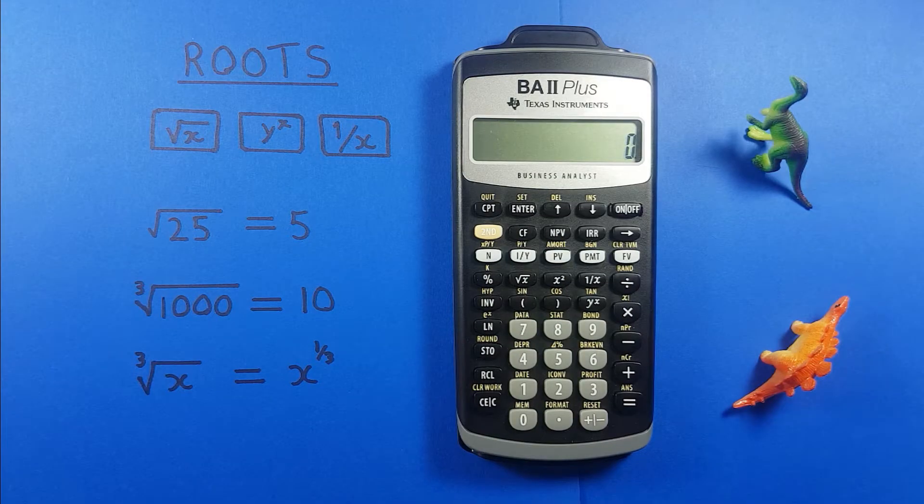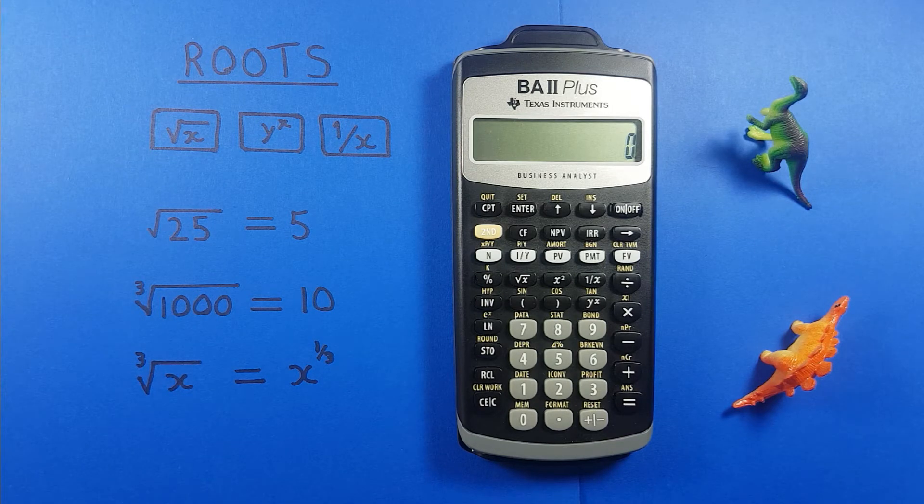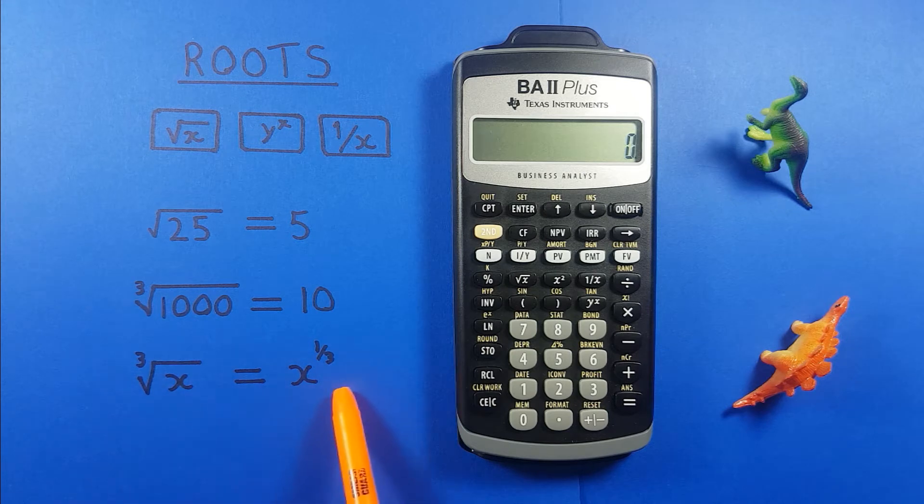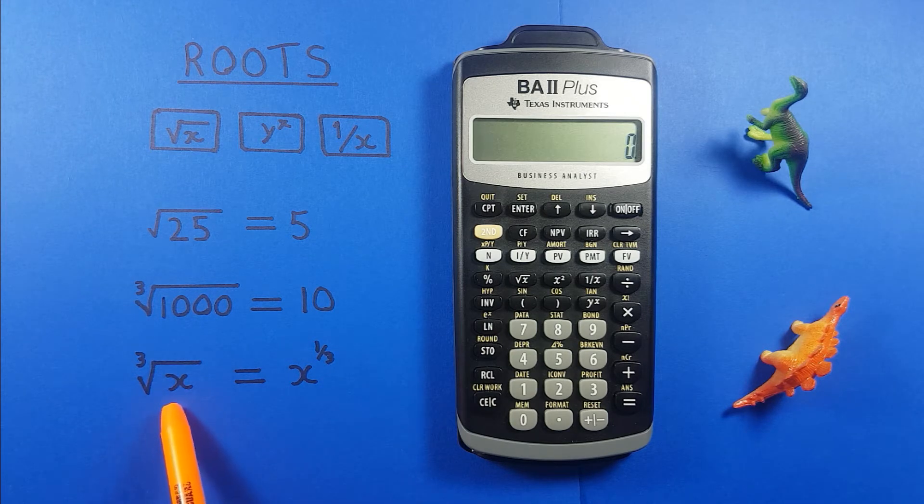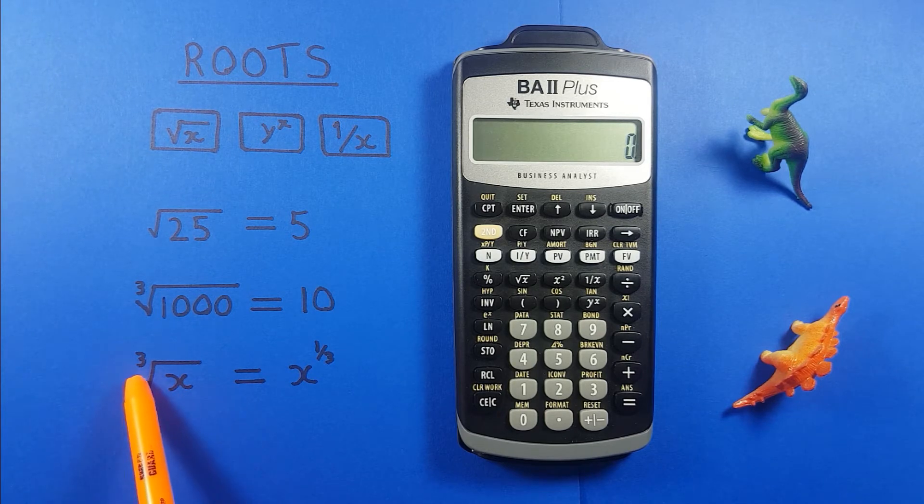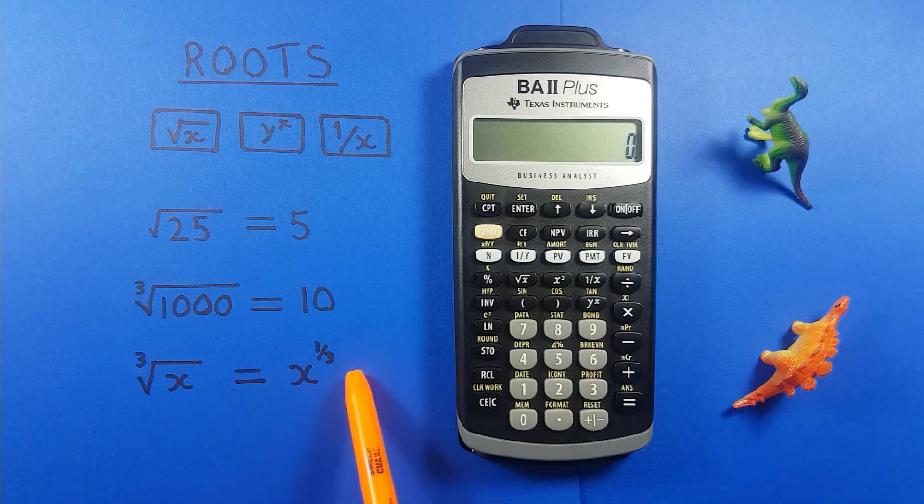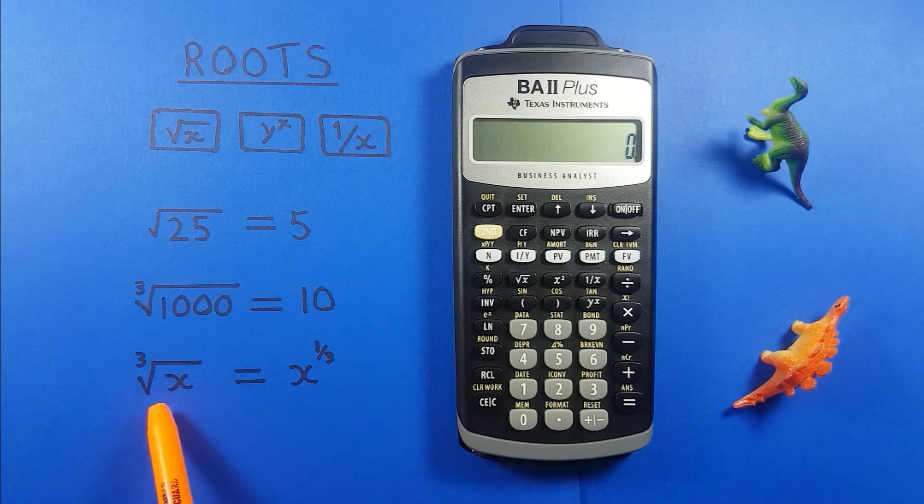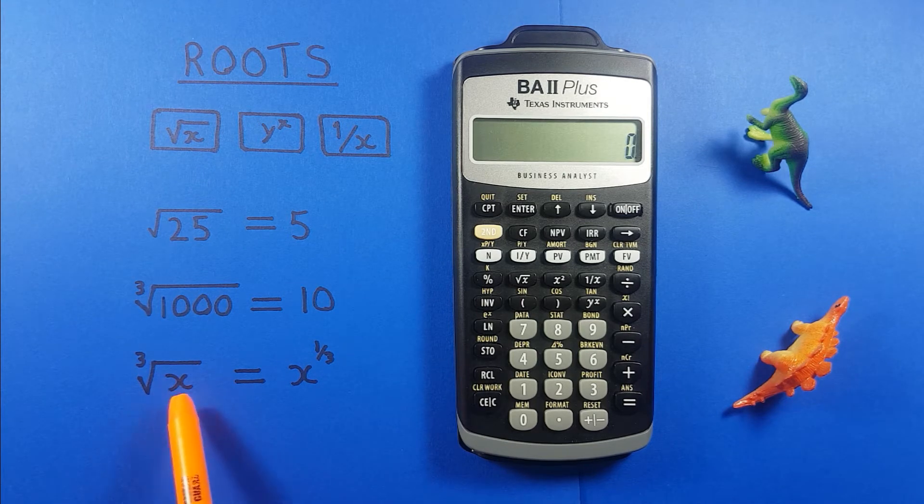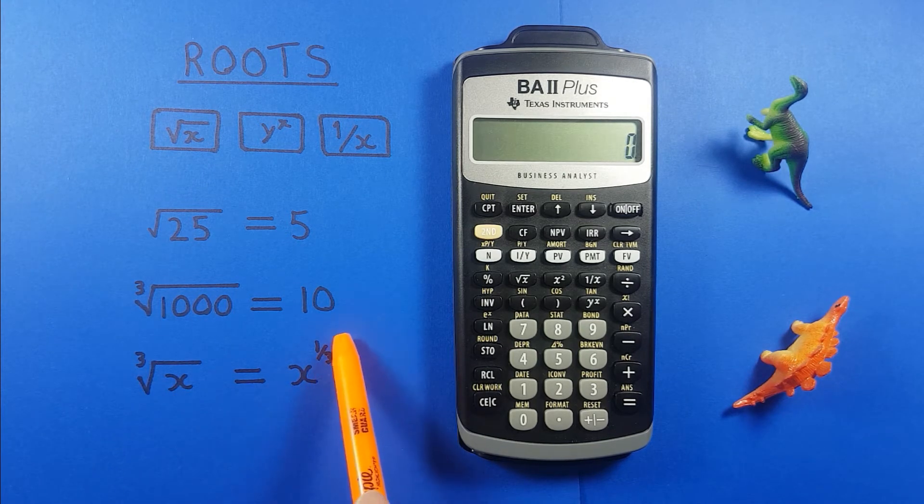So that's easy, but what if we want to find a root that isn't 2 or a square root? Well to do that we need to use this formula here which tells us that a root, in this case a third root or cube root, is the same as an exponent of 1 over that number. So the cube root of x is the same as x to the power of 1 over 3.